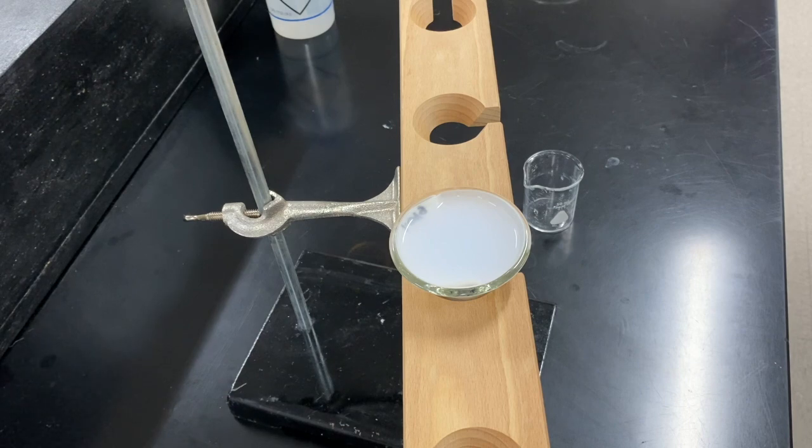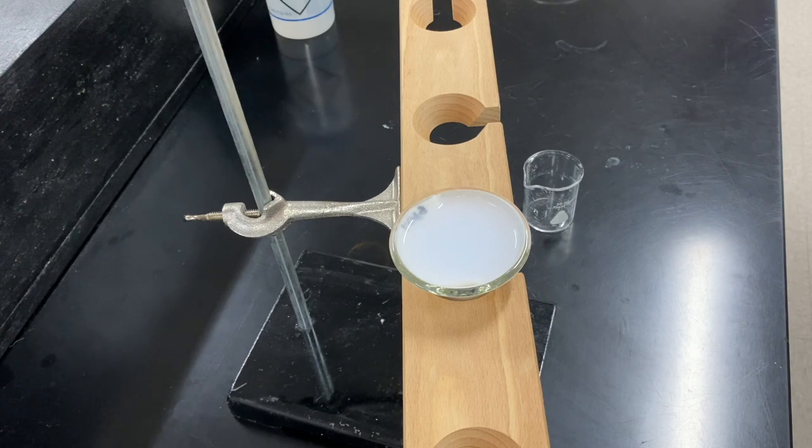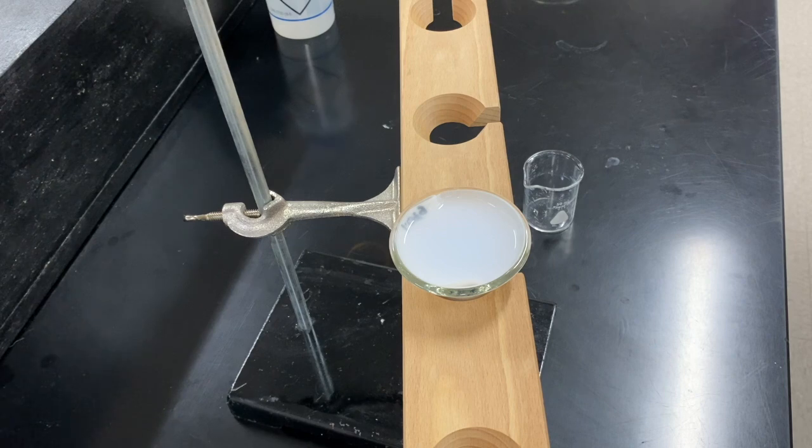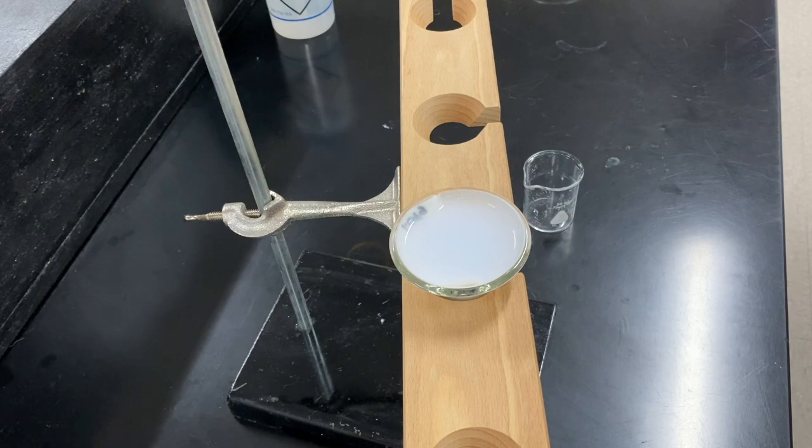And then once we're done filtering, we're going to then move on to the last stage, which is to dry the filter paper so that we can determine the mass of the precipitate that was formed.